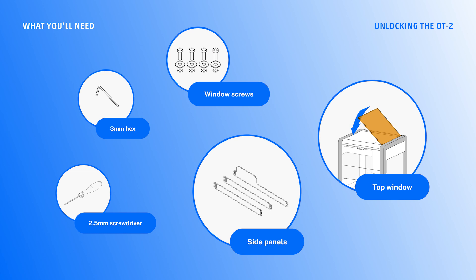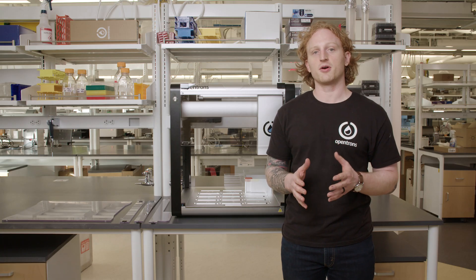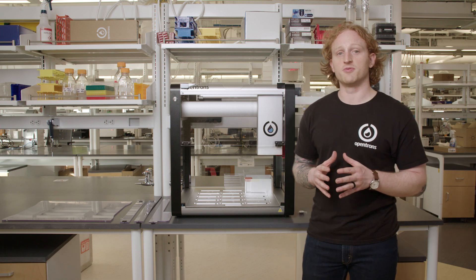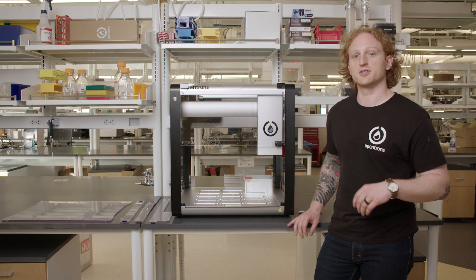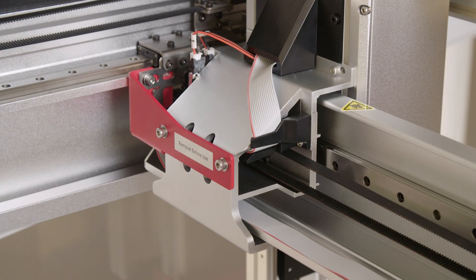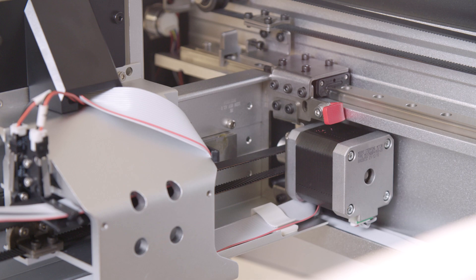To prevent damage during shipping, the moving parts of the OT2 are locked into place with three locking brackets. I will need to remove the brackets before turning on the OT2 for the first time. If I try to turn on the OT2 when these brackets are not removed, the robot will not function properly.